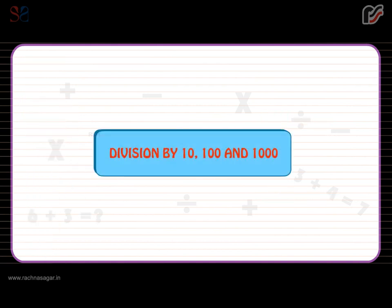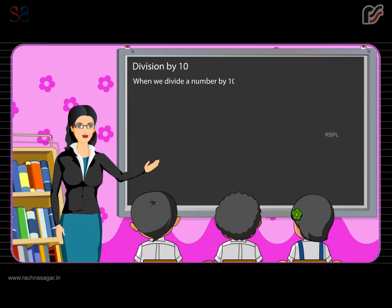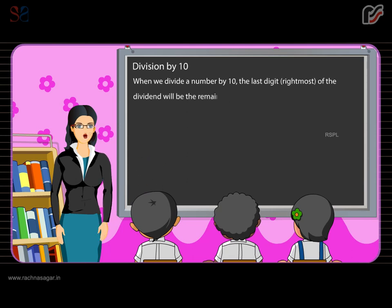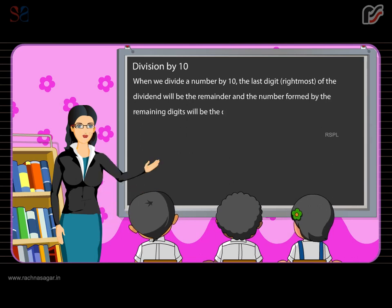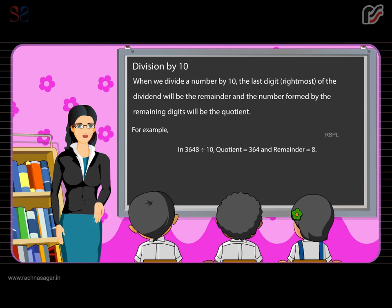Division by 10, 100, and 1000. Division by 10: when we divide a number by 10, the last digit (rightmost) of the dividend will be the remainder and the number formed by the remaining digits will be the quotient. For example, in 3,648 divided by 10, the quotient is equal to 364 and the remainder is equal to 8.